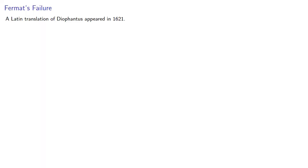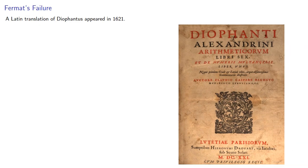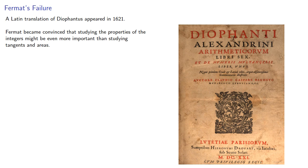A Latin translation of Diophantus appeared in 1621. Fermat became convinced that studying the properties of the integers might be even more important than studying tangents and areas. He tried to get others interested in what we now call number theory.